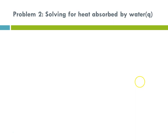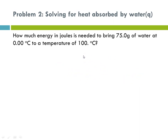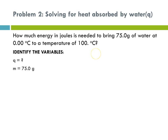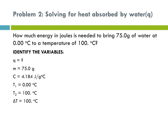For our second problem, we're also going to be solving for heat absorbed by water. This time we're solving for how much energy is needed to bring 75 grams of water at zero to a temperature of 100. Now you'll notice we have a delta T. Our mass is 75.0 grams. Our C for water — liquid water between zero and 100 — is 4.184 joules per gram degree C. Recall that C is specific heat capacity. Our T1 is zero, our T2 is 100, so our delta T is 100 degrees C.